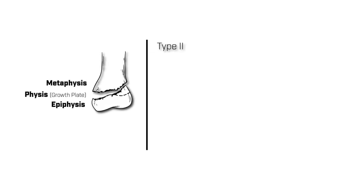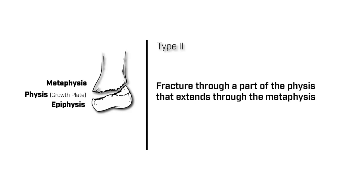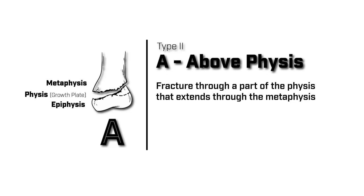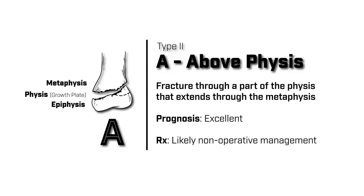A type 2 Salter-Harris fracture is a fracture that goes through the growth plate into the metaphysis. Remember this type by the second letter in SALTER, which is an A for above the physis — because the fracture extends above the growth plate and into the metaphysis. Prognosis for this type of fracture is excellent, and the fracture can at times be managed non-operatively.